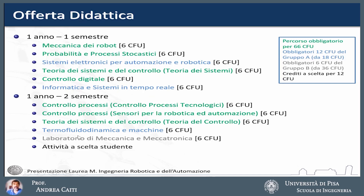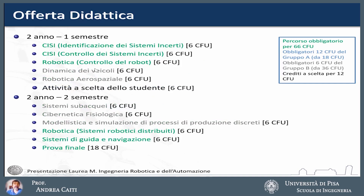There also appears in the first year an exam colored gray: Mechanical and Mechatronics Lab. In the second year there are more gray exams — dynamics of vehicles, aerospace robotics, and others. These gray exams are lab electives — there are six in total, each worth six credits. You must choose at least one, but considering that you have two other free-choice activities, you can actually follow up to three of the six offered.